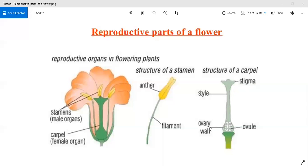Next part is ovary. It is the basal swollen part of the pistil that contains ovules or eggs.